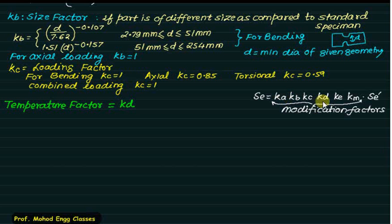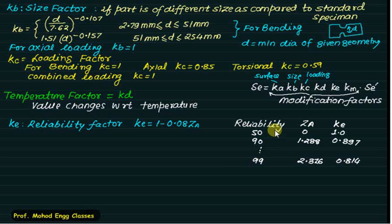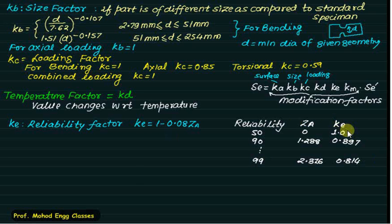KD is the temperature factor and depends on the operating temperature — the data is available in the data book. KE is the reliability factor, given by KE = 1 − 0.08 × ZA. Reliability ranges from 50% to 99%, and ZA ranges from 0 to a maximum of 2.576. If reliability is 50%, KE = 1. If reliability is 99%, KE = 0.814.